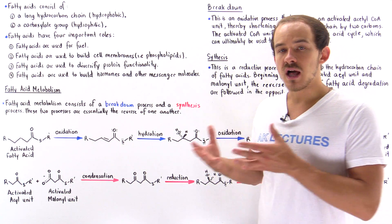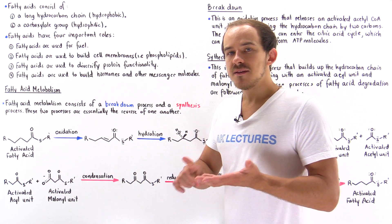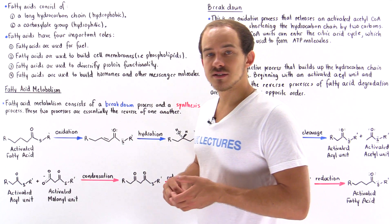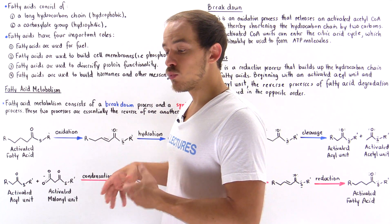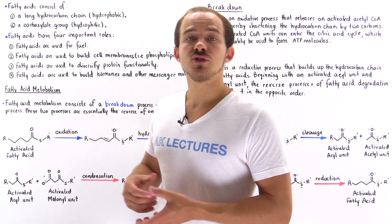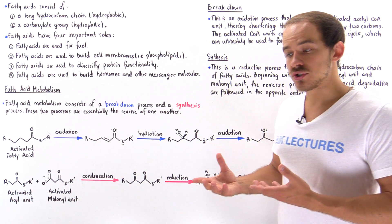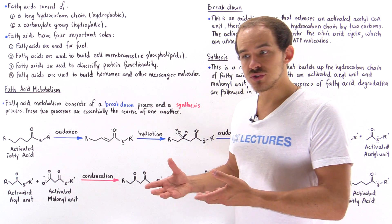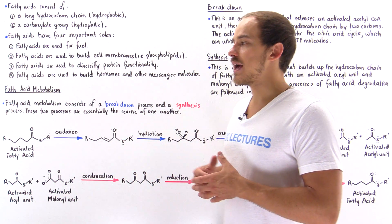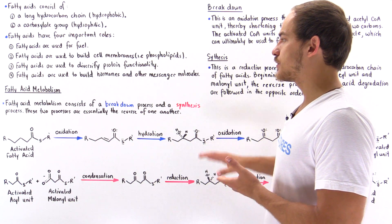Number two: fatty acids are used to build molecules that exist within cell membranes, so things like glycolipids and phospholipids are built from fatty acids. Number three: we can modify proteins by attaching fatty acids onto them, which increases and diversifies the functionality of those proteins. Number four: molecules such as hormones and other intracellular messenger molecules are built from fatty acids.